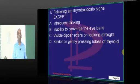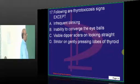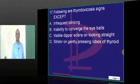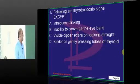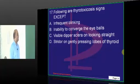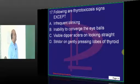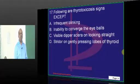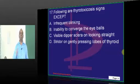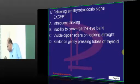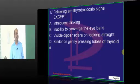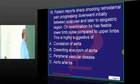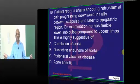In thyrotoxicosis, which clinical sign do you not come across? Infrequent blinking will be there — they will have a staring look. Inability to converge the eyeballs is also a problem due to ophthalmopathy induced by thyrotoxicosis. Infrequent blinking occurs because the eyelid cannot close easily due to proptosis. Amrita proposes B, which is correct — stridor on gently pressing the lobes of the thyroid is not a feature of thyrotoxicosis.